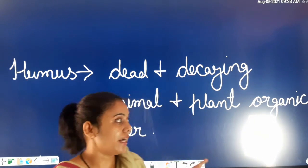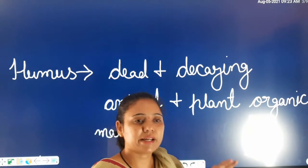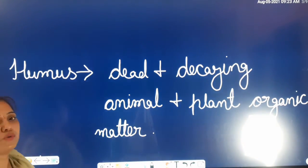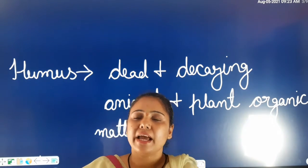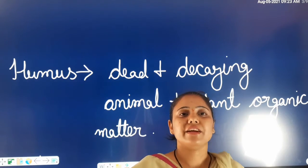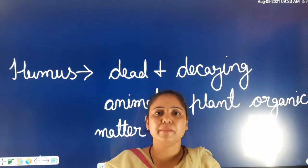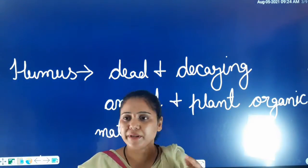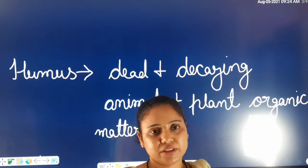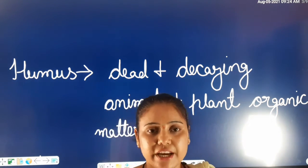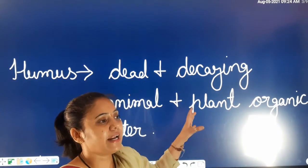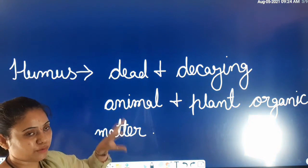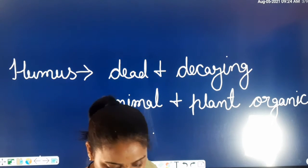Dead and decaying plants and animals are organic matter. We have just taken information according to soil, which is simple soil that we have learned about. Humus refers to dead and decaying organic matter present in the soil.